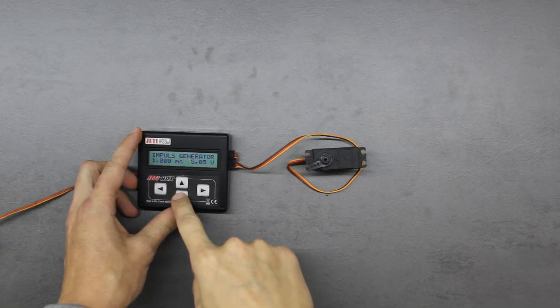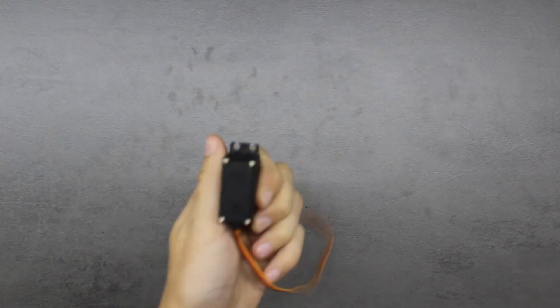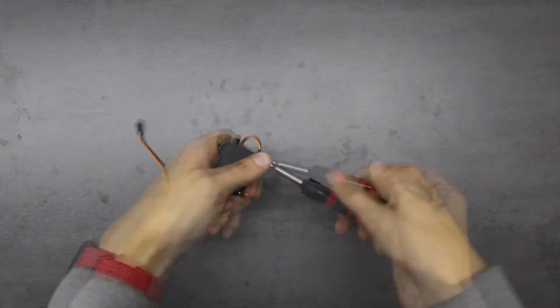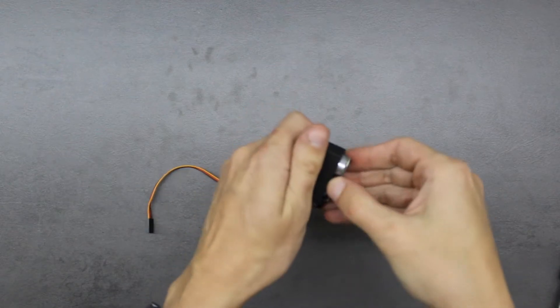Here I have a normal servo with metal gears which have a limited rotational capability. To remove this limitation we must disassemble it by unscrewing these four screws and now we can see the PCB board that converts the PWM signal to the motor movement.